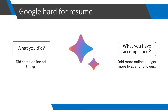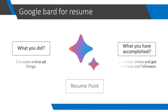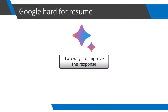Google Bard, based on its understanding of how a good resume point should look, will give you a resume point. If you are not satisfied with the result, you may have to give further prompts to get the point in your desired format. There are two ways to generate a better resume point from the first prompt. The first way is to provide additional information such as resume best practices along with the information of what you did and achieved. This way Bard will suggest the point based on the best practices you tell it. You can either find best practices online or you can ask Google Bard for best practices.